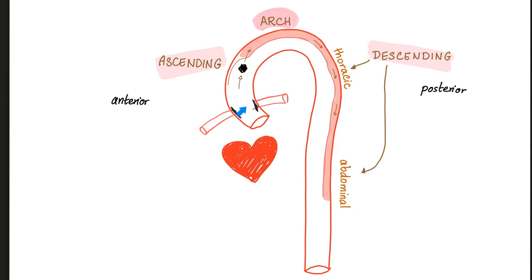If the aortic dissection happened in the ascending, the coronaries are in danger. But if it happened in the arch, or if the dissection happened in the descending, of course it cannot affect the coronary artery. That's common sense, because the coronaries are coming out of the ascending — not the arch, and not the descending.